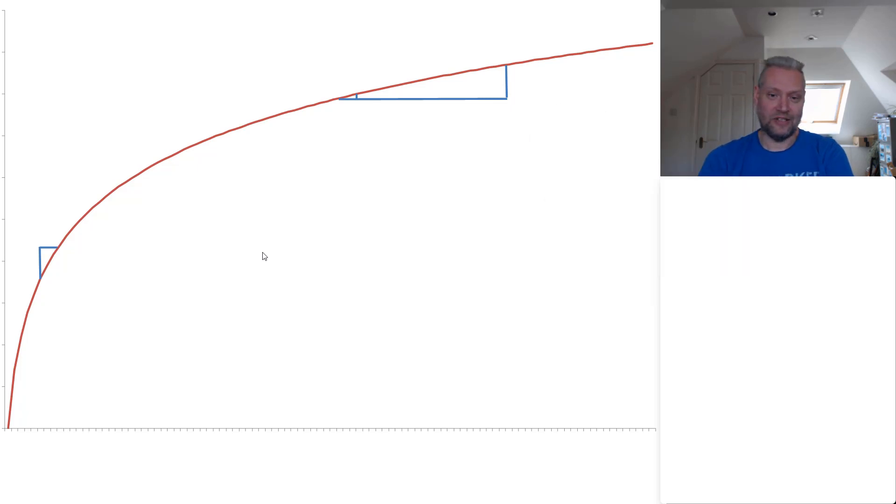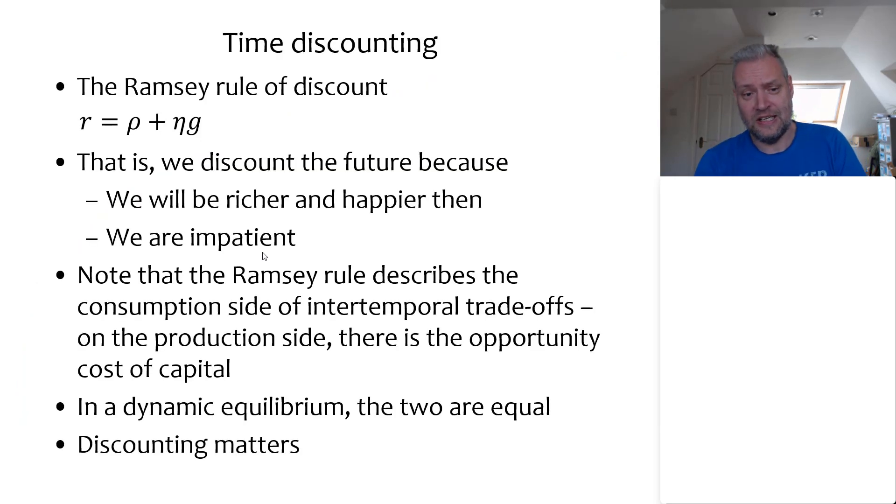And now, so that is the second component of the Ramsey rule. Transferring money to a future rich yourself is simply a bad deal because it doesn't count as much. So that is what the ηg stands for, where g is the growth rate of consumption, and η is the curvature of the utility function, so that ηg is the growth rate of happiness.